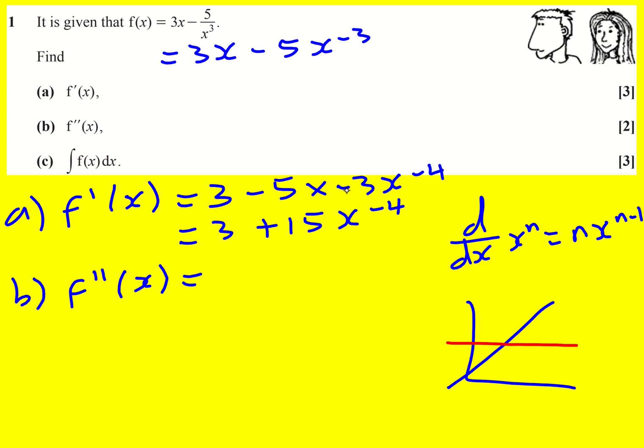Here we bring down the minus 4, so it becomes minus 60 x to the minus 5. That's our answer.